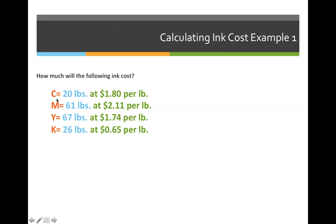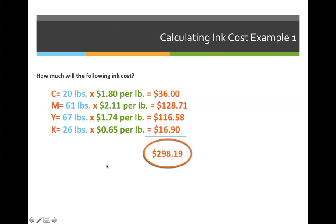To convert these formulas here into actual formulas that we can calculate, we can multiply 20 times 1.80, 61 times 2.11 per pound because that's the value that was given to us. We're not going to make these values up. We have to find out how much ink actually costs. And when we carry them across, we should calculate that cyan will cost us $36.